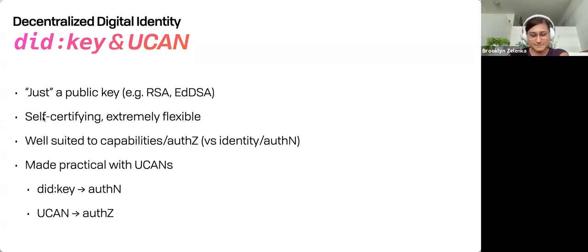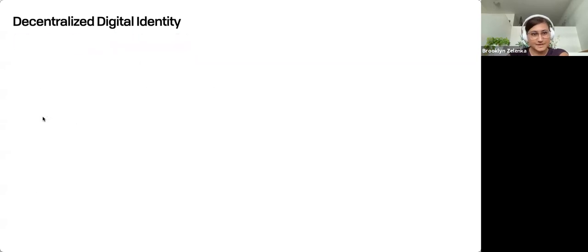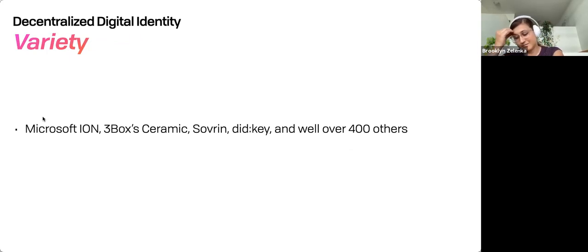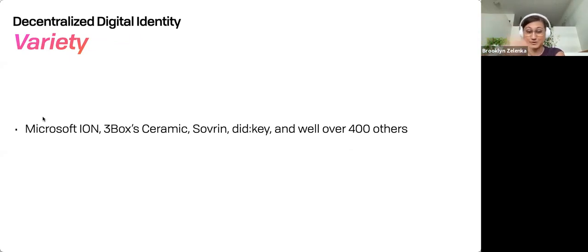Even if that device is being run by me, I don't want to use a public library computer with my full account balance on it. I want to really keep the scopes down. So the key itself — the root key — is your ID, and UCANs provide the authorization portion of that. There's a list with about 400 of them; talking to some people at the Decentralized Identity Foundation, it sounds like there are well over 600 or 800. So there's quite a few.